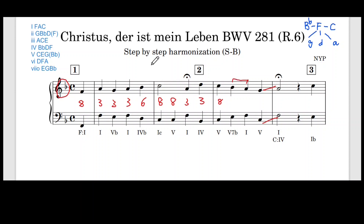This is a B flat from here — C, E, G, B flat. Fa usually resolves downwards to Mi; that is, the seventh note resolves downwards by step. Then the bass will be good to go contrary motion: Ti, Do. This is a common practice and a common pattern. Then we are done with the second phrase.